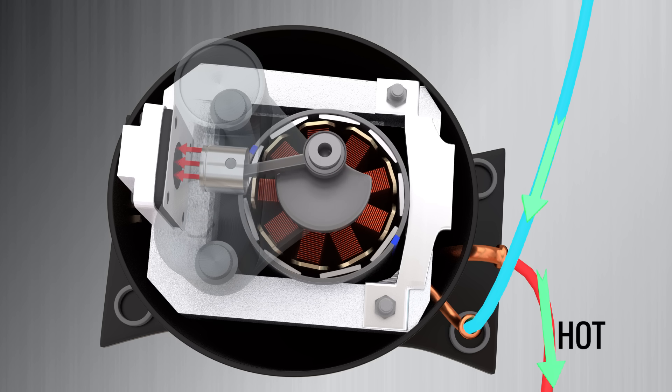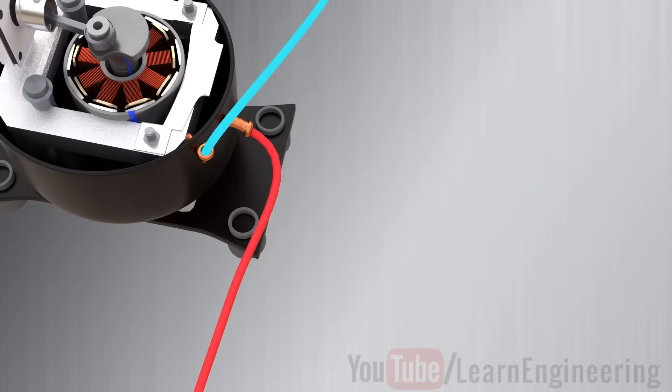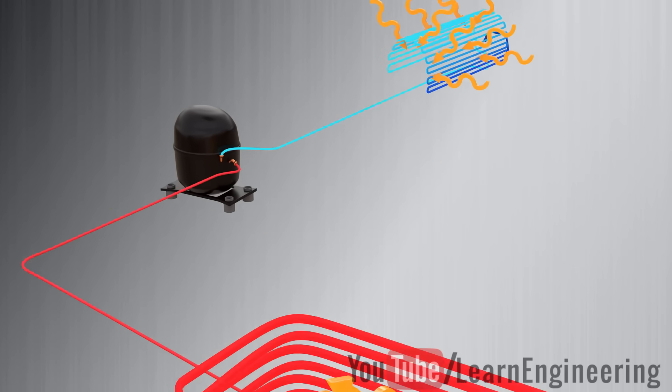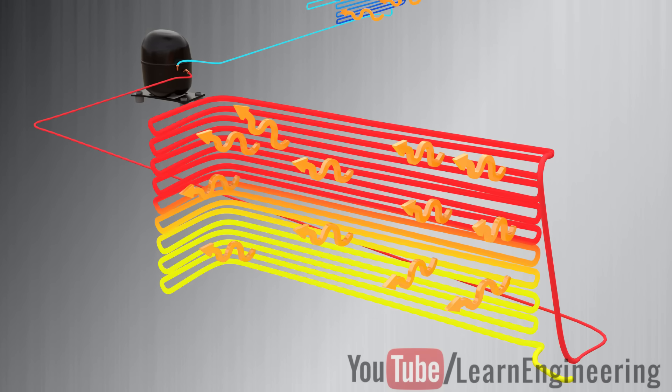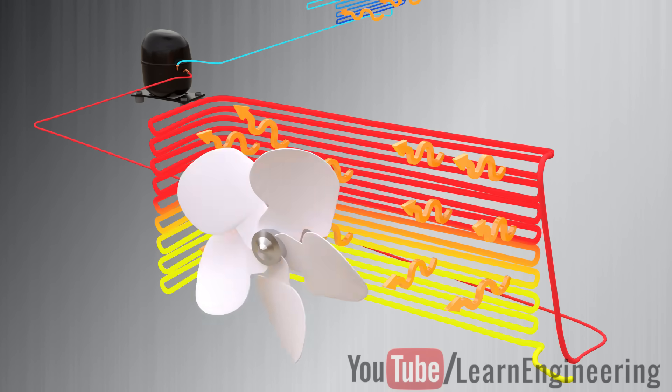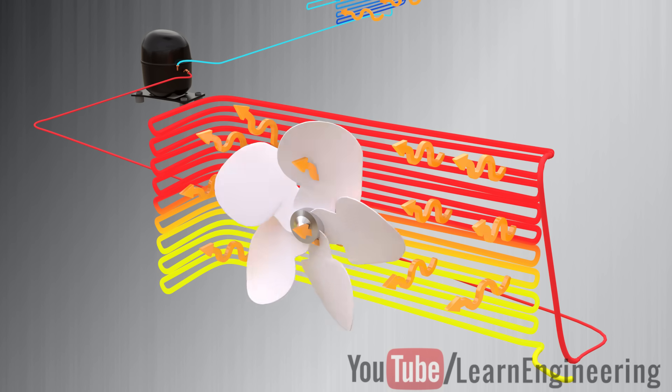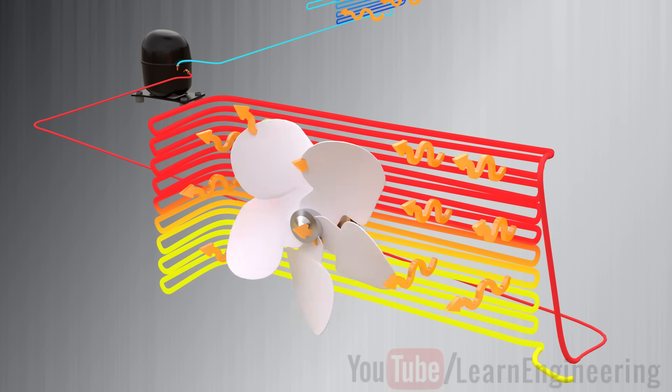Therefore, if you pass this hot gas through the condenser heat exchanger, you can easily eject the heat. A fan in the condenser unit makes this task easier. During this heat ejection phase, the gas gets condensed to a liquid.